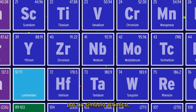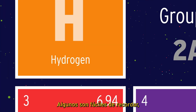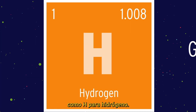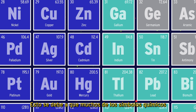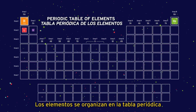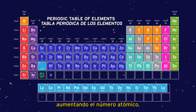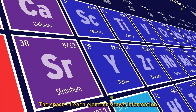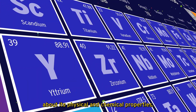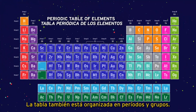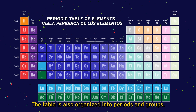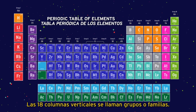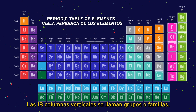Each element is represented by an atomic symbol, which is one or two letters. Some are easy to remember, like H is for hydrogen. Others are a bit trickier — K is for potassium and AU is gold. This is because many of the chemical symbols for the elements reflect the name of the element in a different language. The elements are organized in the periodic table by increasing atomic number. The seven horizontal rows are called periods, and the 18 vertical columns are called groups or families.